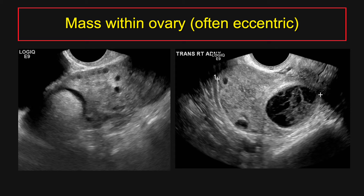Another important morphologic feature is the presence of a mass or cyst within the ovary, which is often eccentric and serves as a lead point, causing the ovary to twist on the vascular pedicle. These are two separate cases of ovarian torsion proven at surgery. On the left image, you can see an echogenic mass with posterior shadowing eccentrically located within the ovary with stromal edema and peripheralization of the follicles — a dermoid cyst leading to torsion. On the right image, an enlarged ovary with stromal edema and a lead point hemorrhagic corpus luteal cyst leading to torsion.